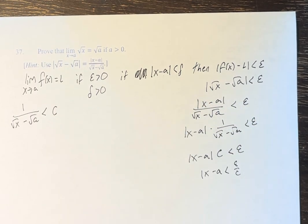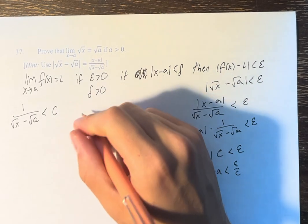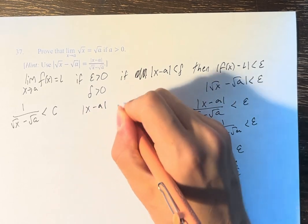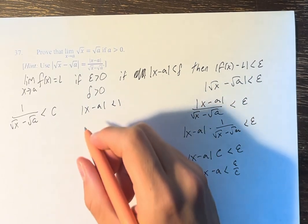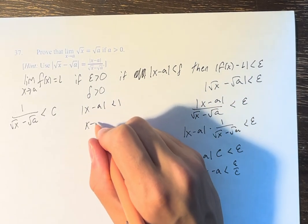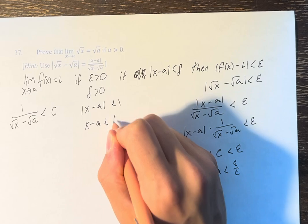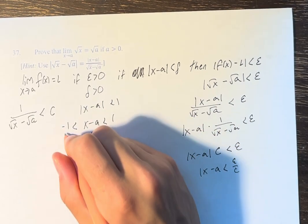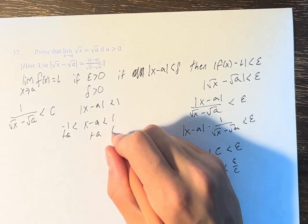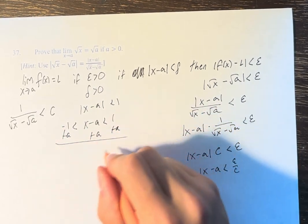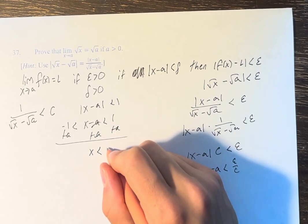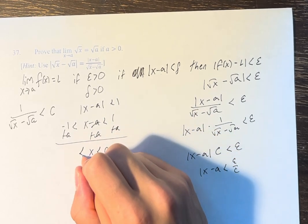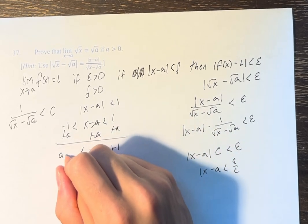What we do is pick a tester value for delta. Let's say delta equals 1. This means that x minus a is less than 1 and greater than negative 1. Adding a to all sides of this inequality, we get that x is less than a plus 1 and greater than a minus 1.